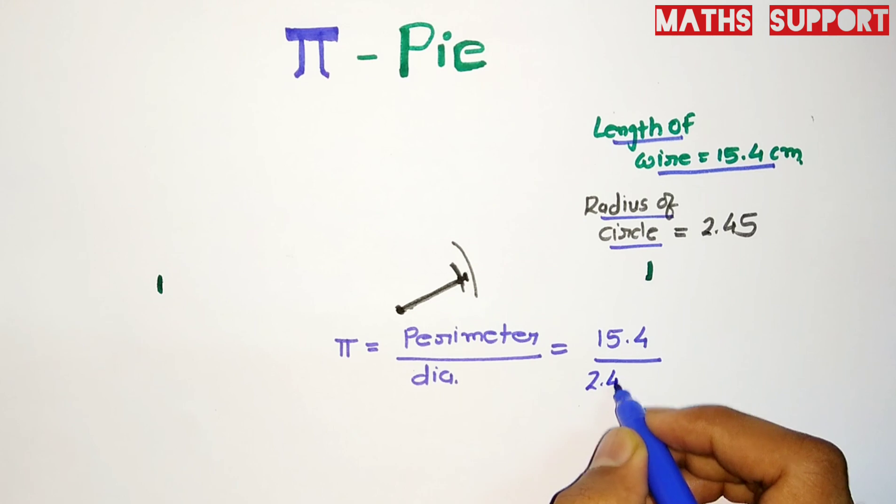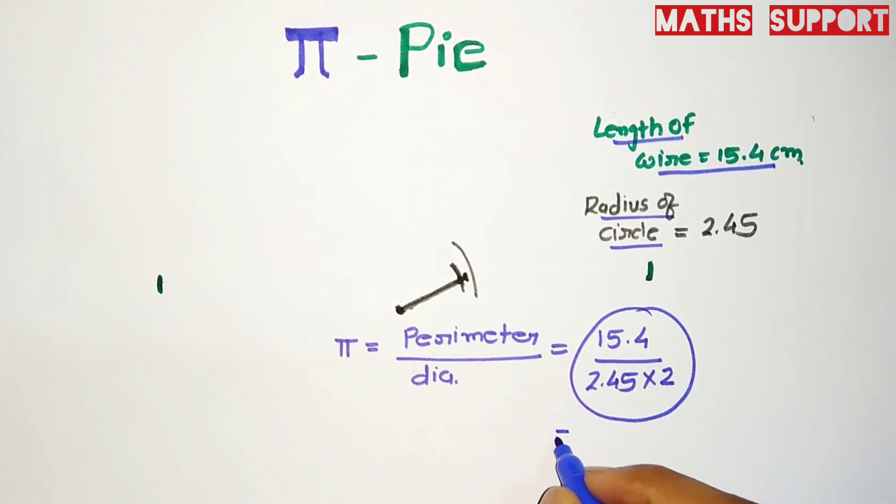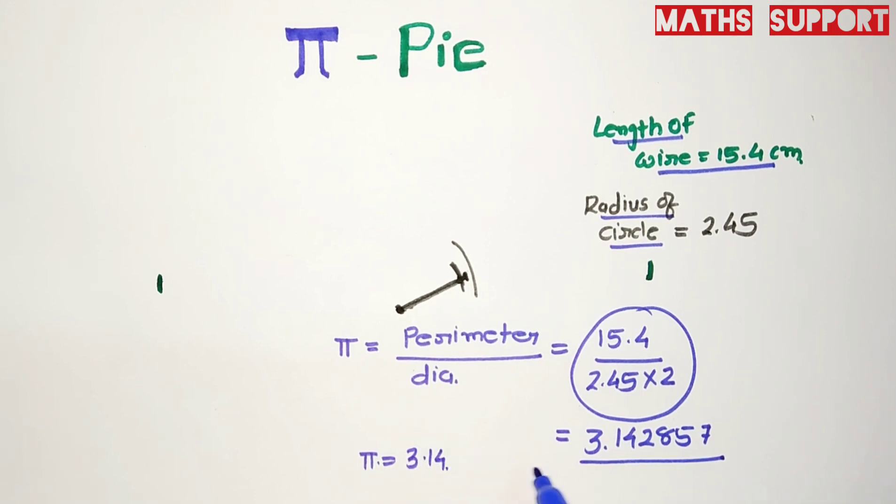If I'm simplifying this, I'm getting the value 3.142857. You can check this with a calculator. We are taking pi as 3.14, so this is actually very near to this value.